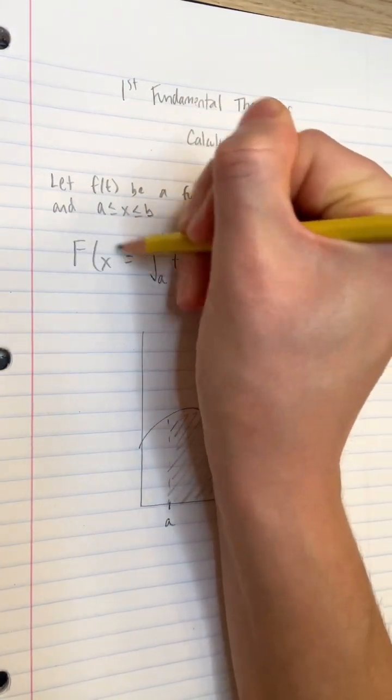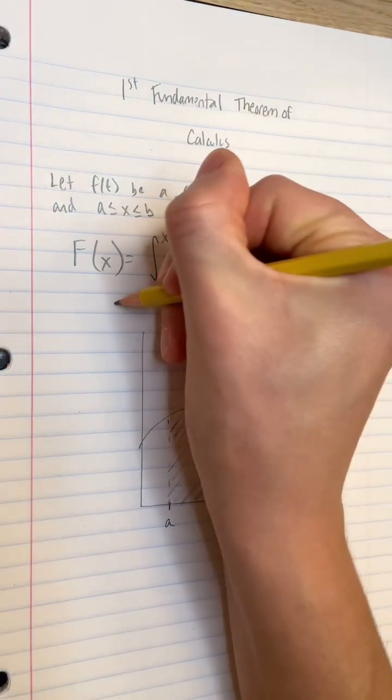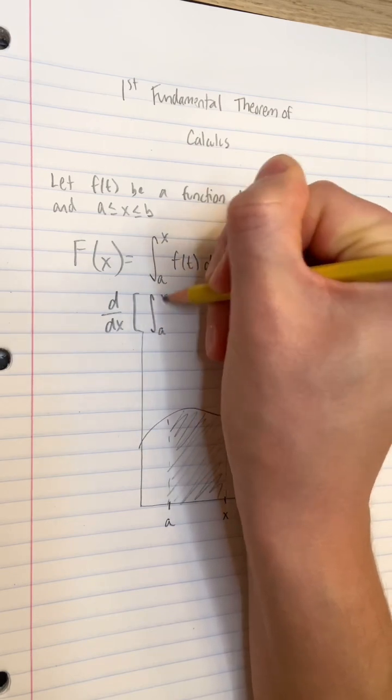Now let's make this a function, capital F of x. Its variable is x, so we pick the upper limit of integration, and the output is the area under the curve from a to that number.